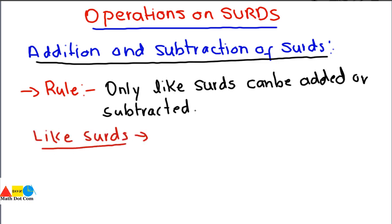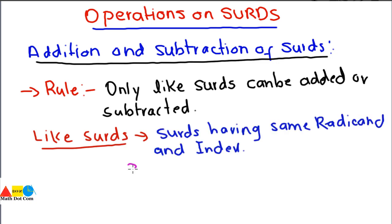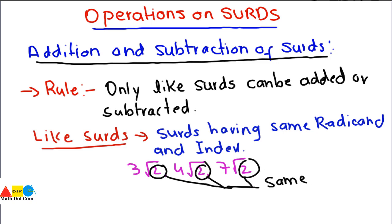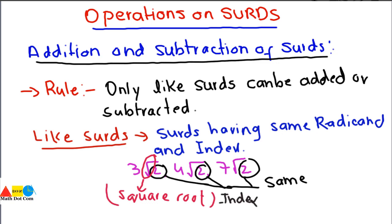Like surds are basically surds having the same radicand and index. For example, 3√2, 4√2, and 7√2 are three surds. You have to check whether they have the same radicand and the same index. The radicand here is 2 — all three are the same. The index indicates whether it is a square root, cube root, or fourth root. Here all three have the same square root index, so they are like surds and can be added or subtracted together.